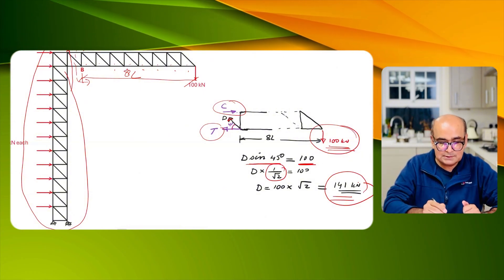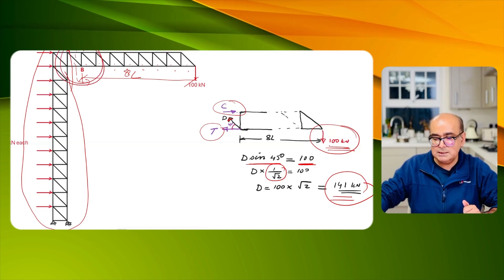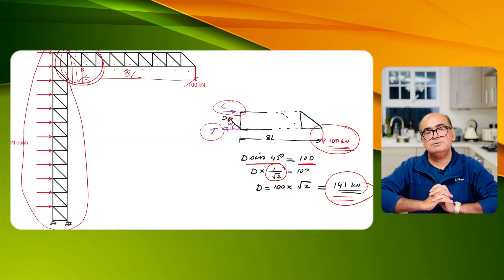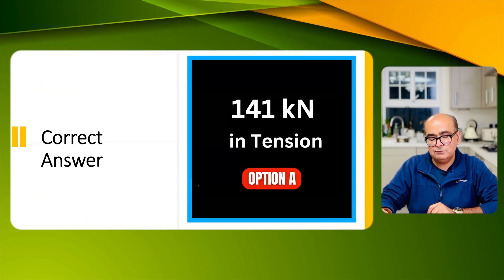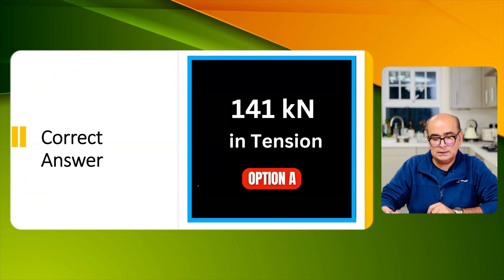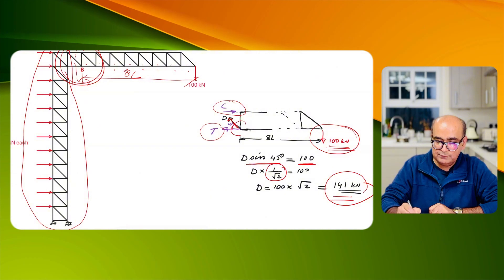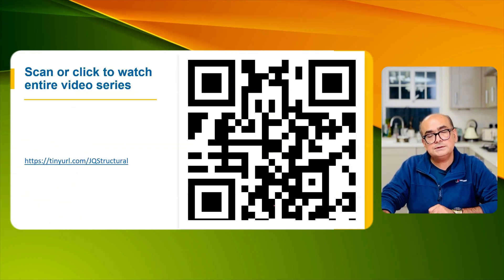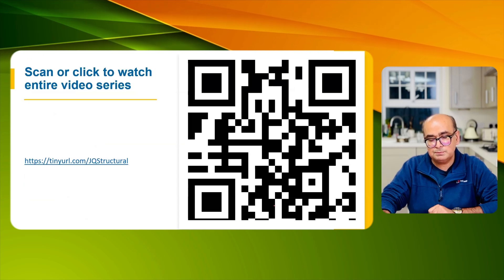And from here we can work out force in diagonal as 141 as simple as that. So you can get these kind of simple questions as well. So the force in this member AB is equal to 141 kN. So our correct option is option A which is 141 kN in tension, tension because these arrows are pointing away from the joint.